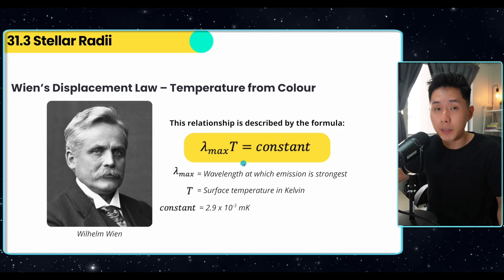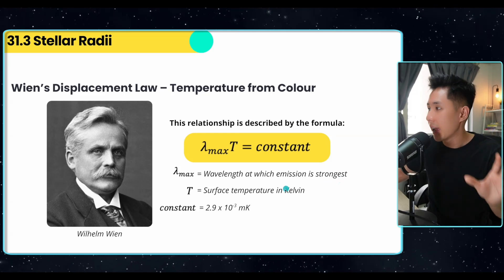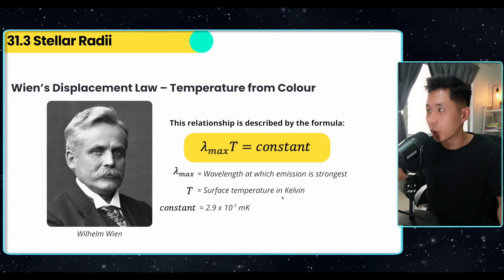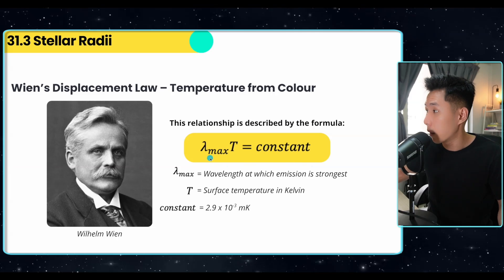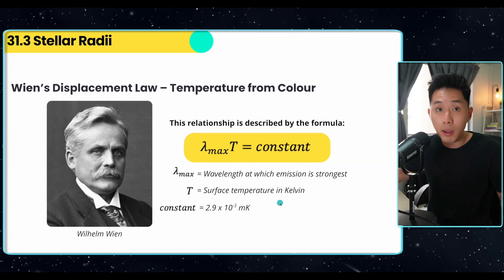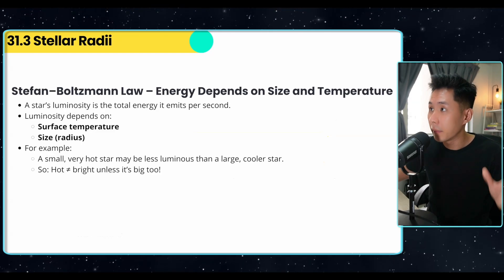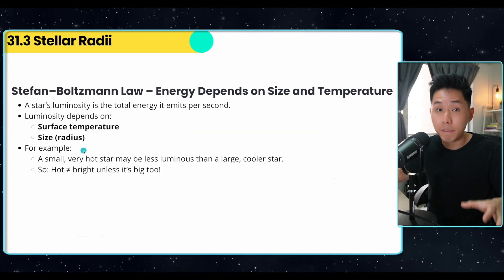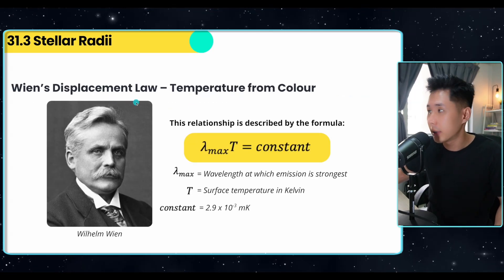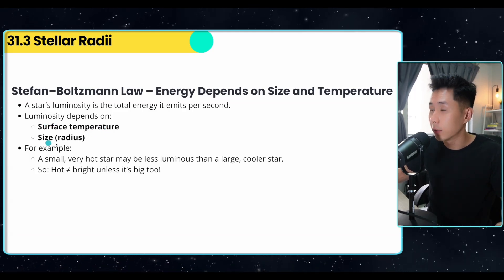Scientists discovered the relationship between the wavelength at which emission is strongest and the surface temperature. This relationship is described by Wien's displacement law: λT = constant, where the constant is 2.898 × 10⁻³ m·K. Before showing how to use this formula, let's look at another law — the Stefan-Boltzmann law. This law tells us that the luminosity of a star depends on two things: surface temperature and size.